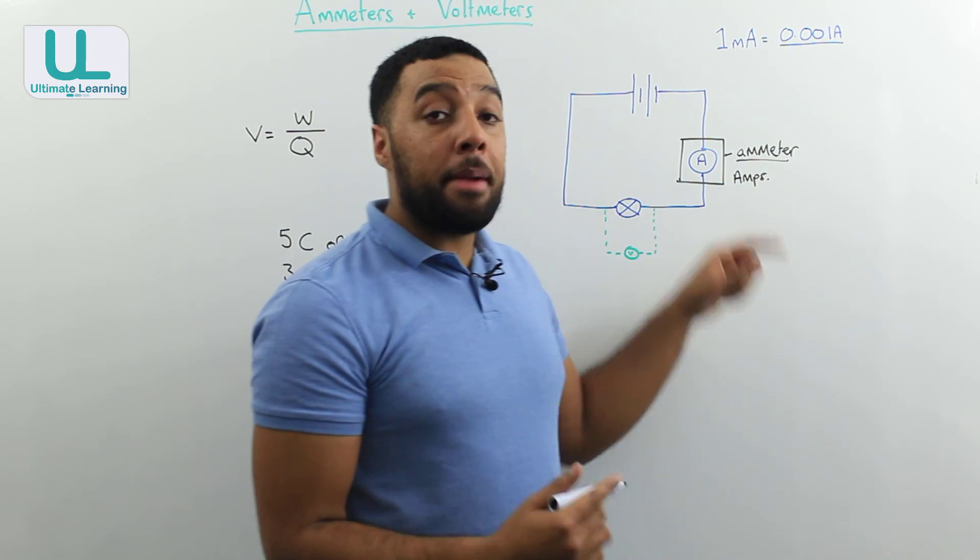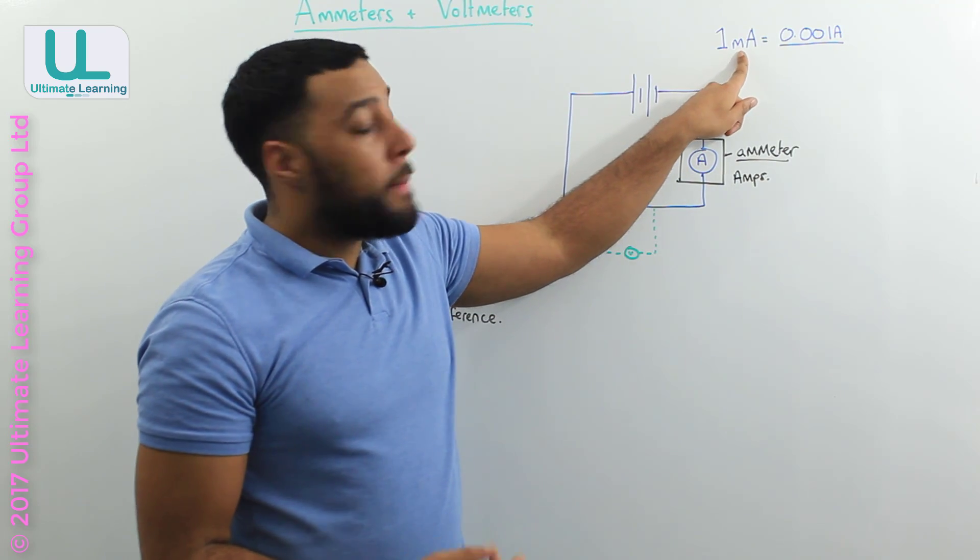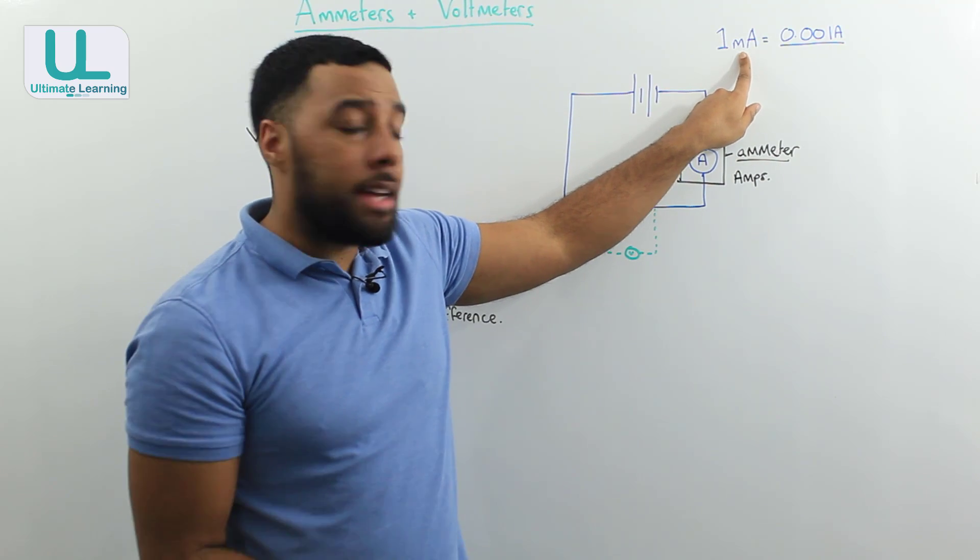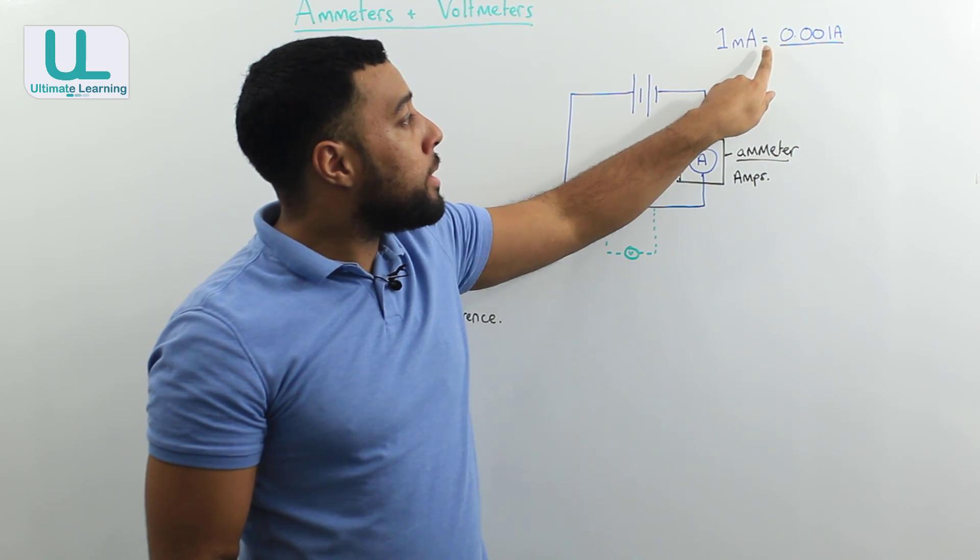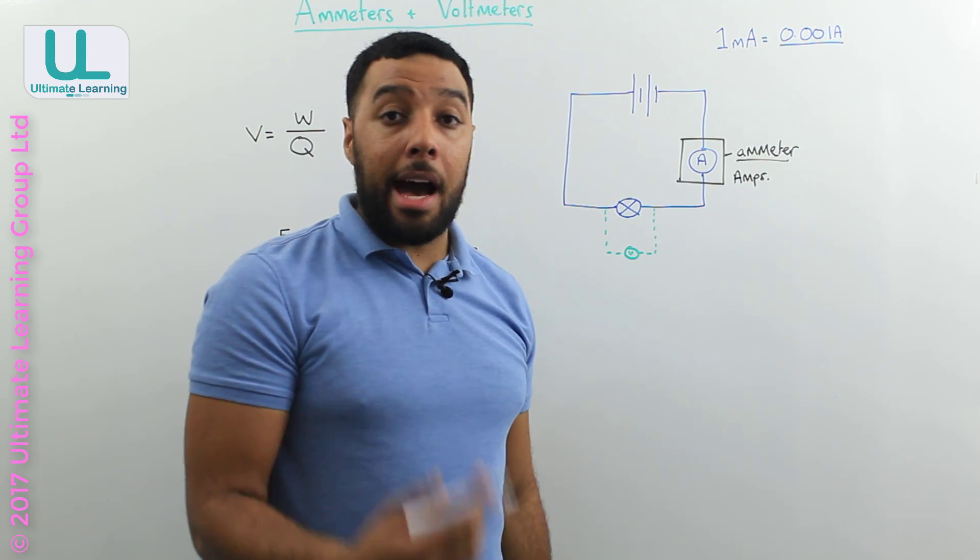Some ammeters can measure really small current and they give a unit in milliamps. And just for your knowledge, one milliamp is equivalent to 0.001 ampere.